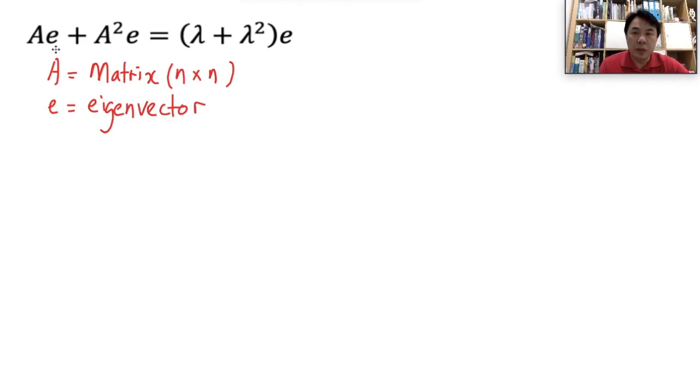We are trying to prove this identity where we can get A multiplied with e plus A squared multiplied with e would actually give us the same result as the expressions on the right hand side. Now, how is that possible?